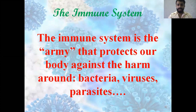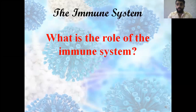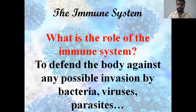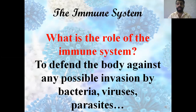What is the immune system? It's the army that protects our body against the harm around us — bacteria, viruses, and parasites. The role of the immune system is to protect the body against any possible invasion by bacteria, viruses, and parasites that are classified as pathogens and can cause disease.